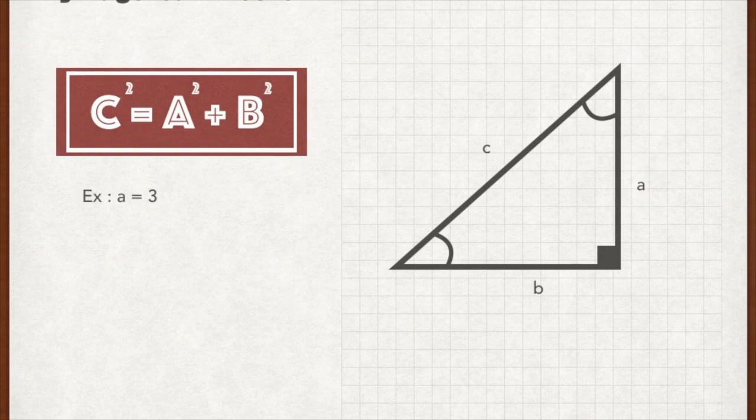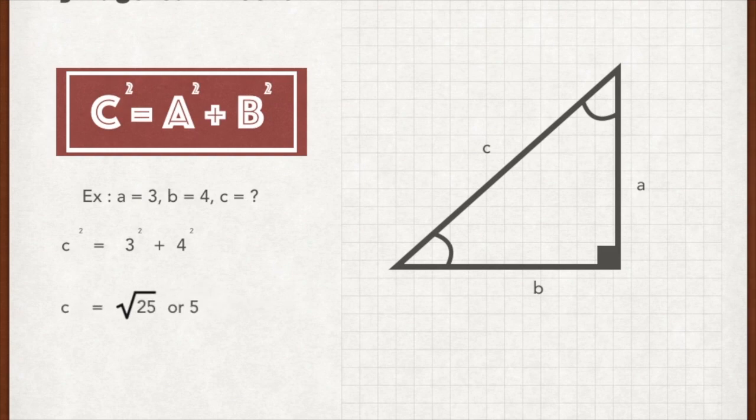Now let's try this example. The question gives A and B, where A is 3 and B is 4. We have to find C. The first step, we plug in all the numbers in the formula given, then calculate the answer, which is root 25 or 5. Thank you for watching.